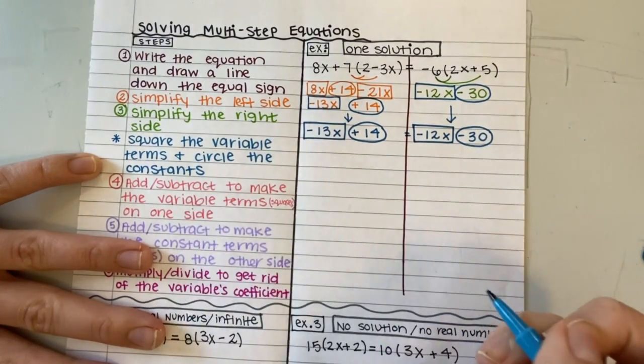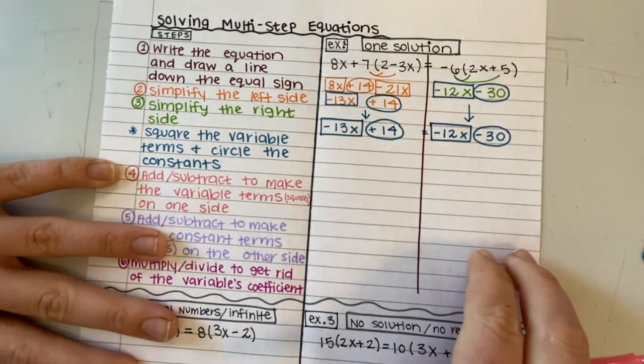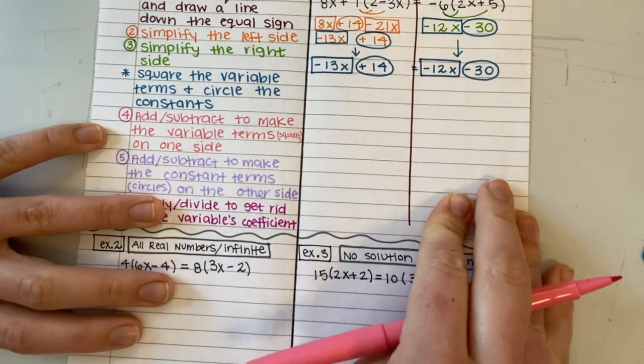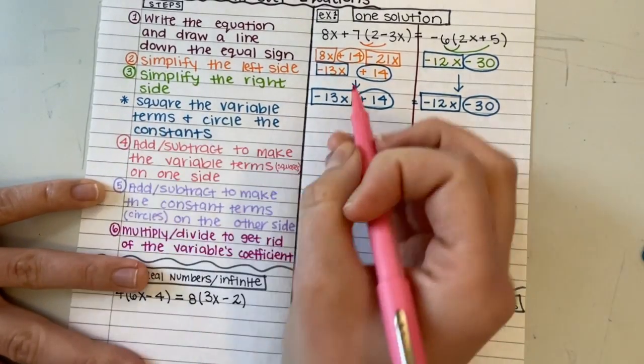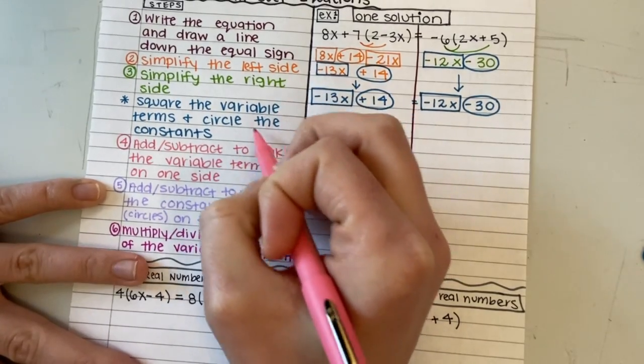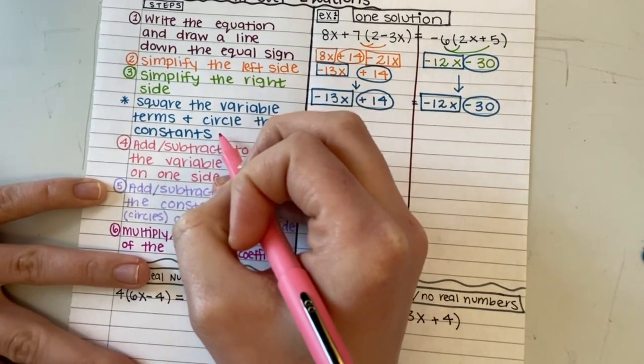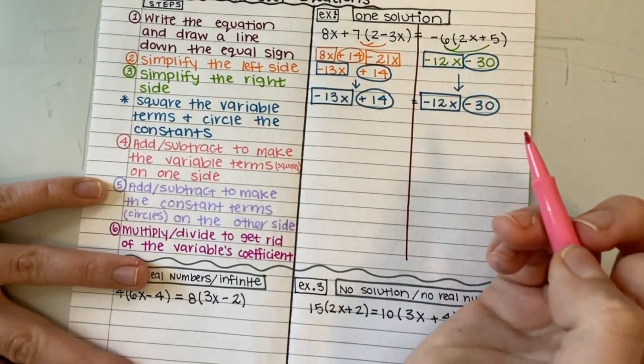So I've done that and I can move on to step number four. The reason I square the variable terms and circle the constants in its own step is because usually as part of steps two and three, you kind of include this circle and square, because that's how you figure out that you're done with the simplifying.